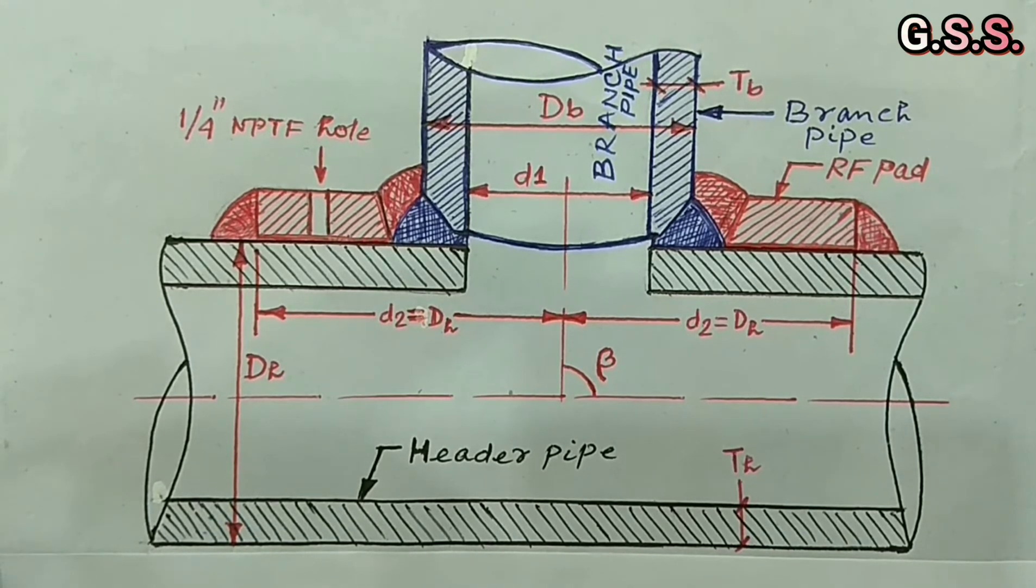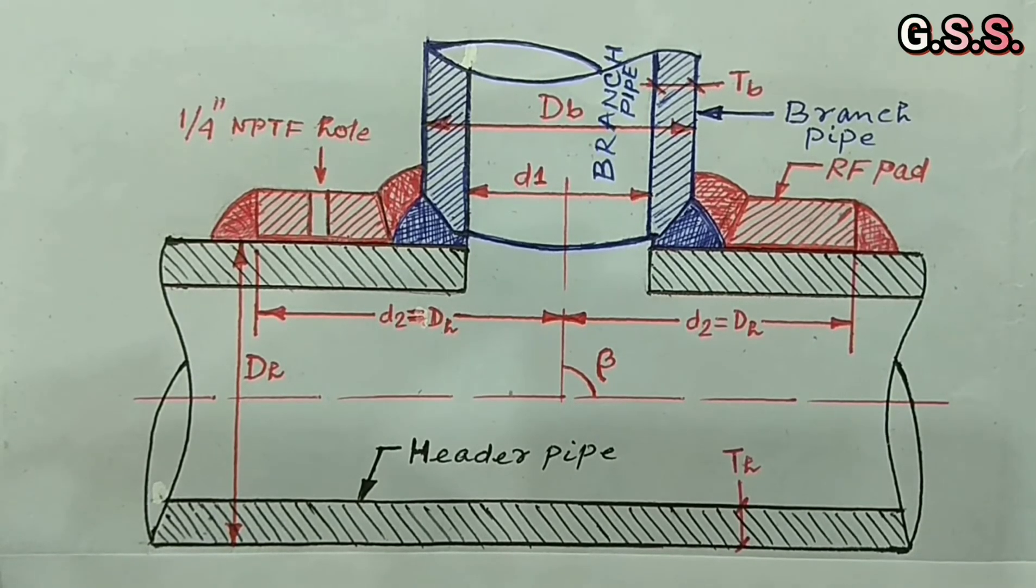For same size branching, it is not possible to provide RF pad. So if direct branching is not safe, then we have to provide an equal T.